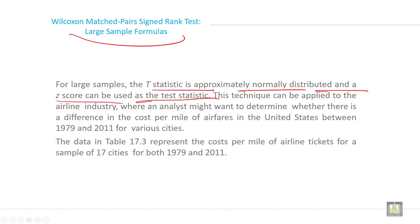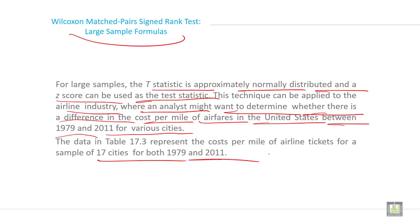This technique can be applied to the airline industry where an analyst might want to determine whether there is a difference in the cost per mile of airfare in the United States between 1979 and 2011 for various cities. The data in table 17.3 represent the cost per mile of airline tickets for a sample of 17 cities for both 1979 and 2011.